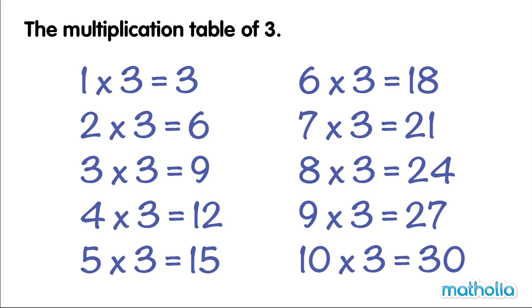The multiplication table of 3. 1 times 3 is 3, 2 threes are 6, 3 threes are 9, 4 threes are 12, 5 threes are 15.